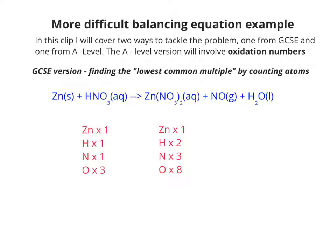What we've got to do is find the lowest common multiple of the element that has the biggest difference. So looking at oxygen, it has the biggest difference between the left and the right, so that's where we need to start.